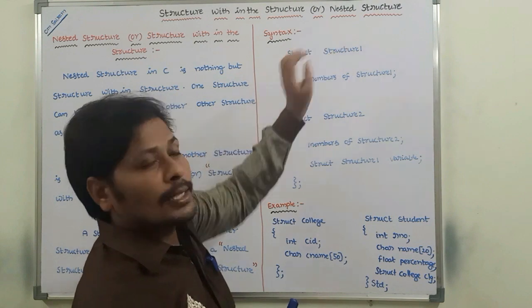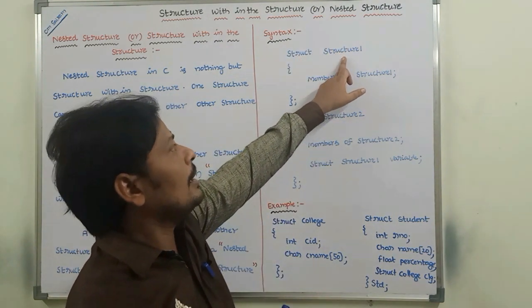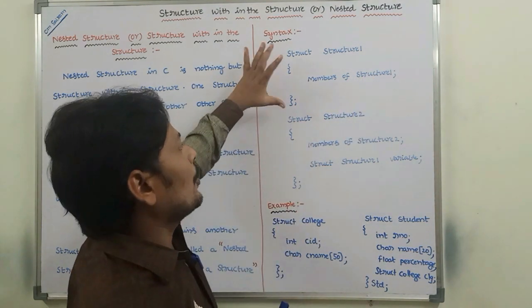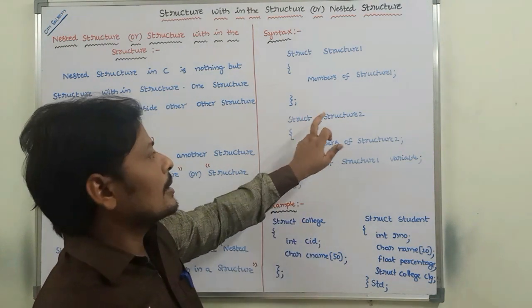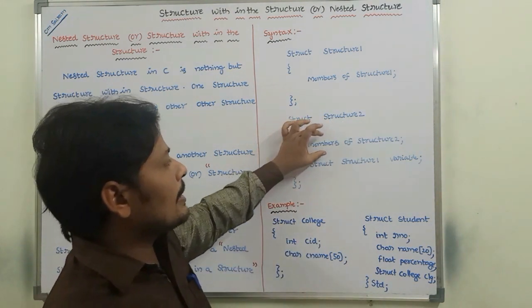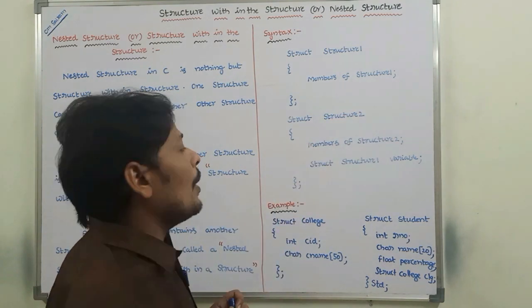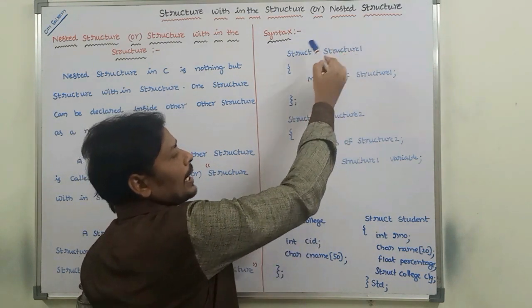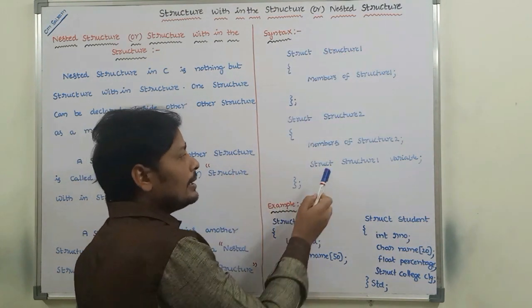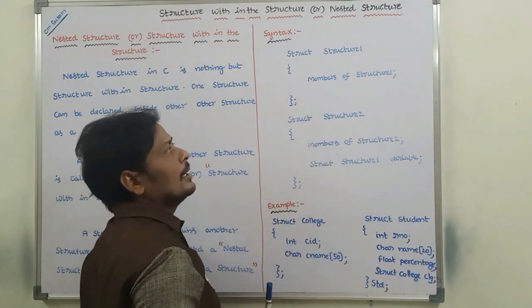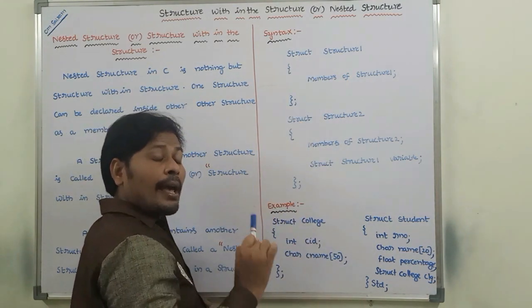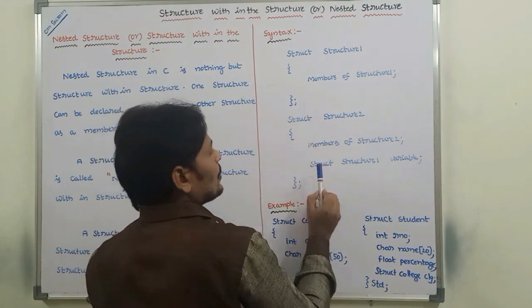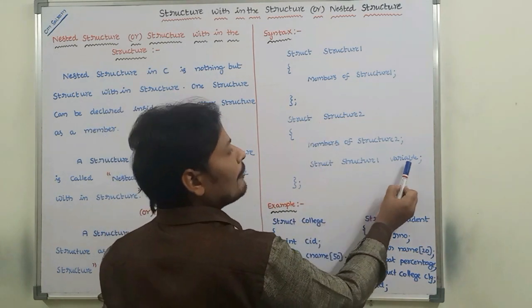Consider structure 1 — these are the members of structure 1. Now go for structure 2 — these are the members of structure 2. In addition, structure 1 can be declared as a data member in structure 2. How it can be declared? Like this: struct structure1 variable.